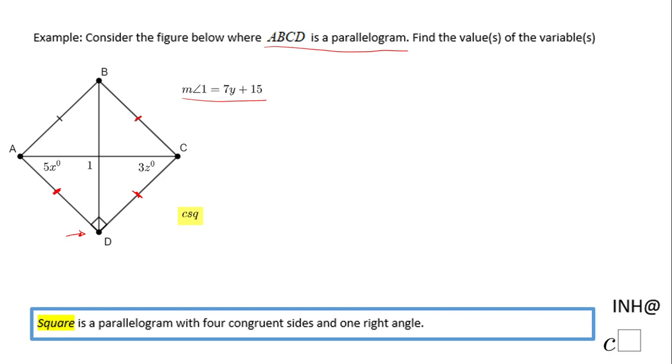Now we're going to use the property of a square to find this variable. First, I'm going to look at angle one. In a square, diagonals are perpendicular—BD is perpendicular to AC. That means the measure of angle one is 90 degrees, which gives me an equation: 7y plus 15 equals 90. I'm going to subtract 15.